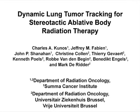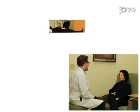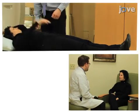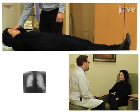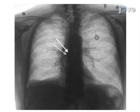The overall goal of this procedure is to treat lung tumors with dynamic tracking during stereotactic ablative body radiation therapy. This is accomplished by first discussing treatment options with the patient, including dynamic tracking during delivery of therapeutic radiation to a lung tumor. Next, the lung tumor target is identified by tagging it with a permanent gold-coated fiducial marker.